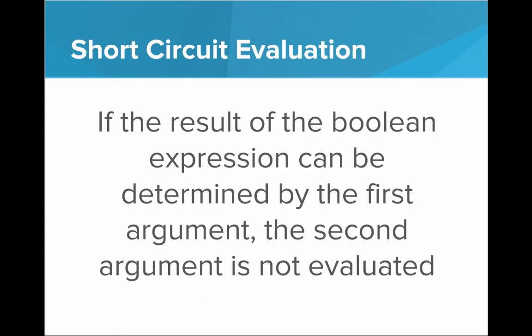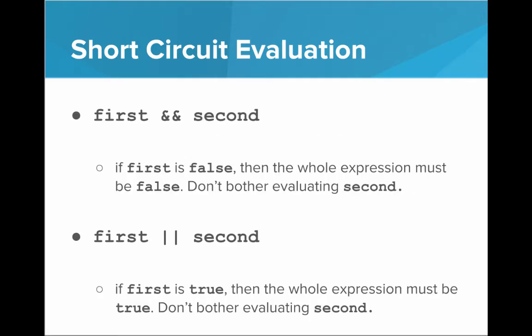This is called short circuit evaluation. If the result of the Boolean expression can be determined by the first argument, then there's no reason to look at the second argument — the second argument will not be evaluated. Specifically, if we have 'first and second' and first is false, the whole expression must be false; we don't bother evaluating second. If we have 'first or second' and first is true, the whole expression must be true — don't bother evaluating second.